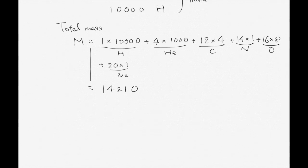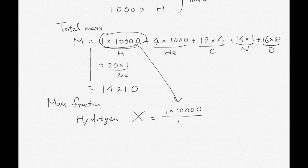Then mass fractions of the atoms can be calculated by dividing by the total mass of the atoms. So, for hydrogen, mass fraction of hydrogen, we use X, capital X, to describe the mass fraction of hydrogen. It's going to be 1 times 10,000 divided by total mass. So you can easily calculate. This is 0.70. Mass fraction of hydrogen becomes 0.70.